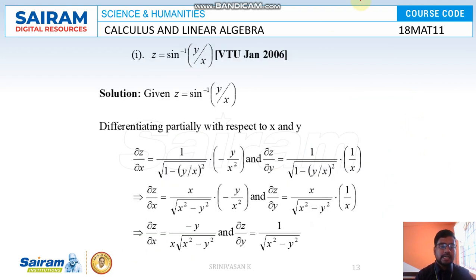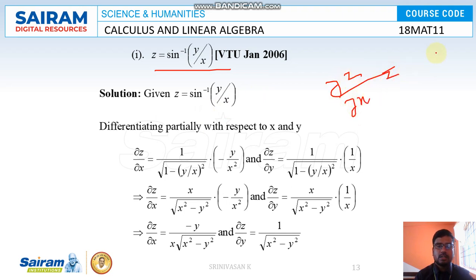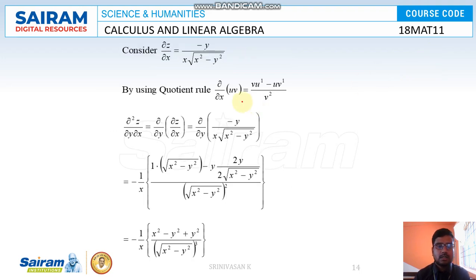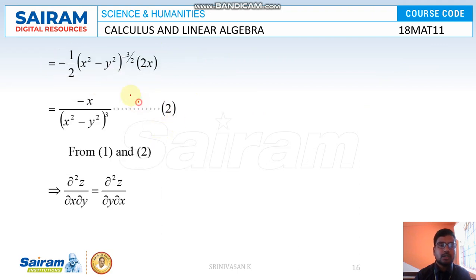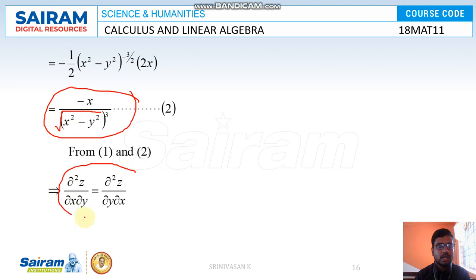The second problem in this example: z = sin⁻¹(y/x). Using the same process to verify ∂²z/∂x∂y = ∂²z/∂y∂x, equation 1 gives −x / √(x² − y²)³ and equation 2 also gives −x / √(x² − y²)³. Since equations 1 and 2 are equal, the condition is satisfied.